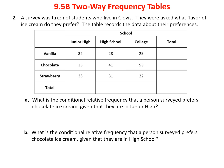Let's try a second problem. We took a survey of students in Clovis and asked them what flavor of ice cream they prefer. The table shows the joint frequency data — for example, 32 is the number of junior high students who preferred vanilla. Let's fill in our marginal frequencies: 100 junior high, 100 high school, and 100 college students. The totals were: vanilla 85, chocolate 127, and strawberry 88. Both the row and column totals add up to 300.